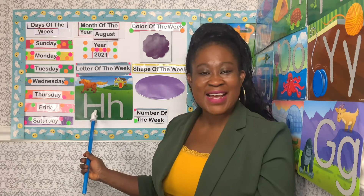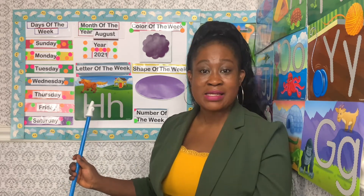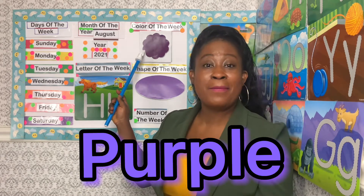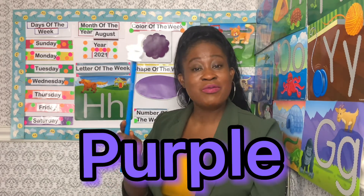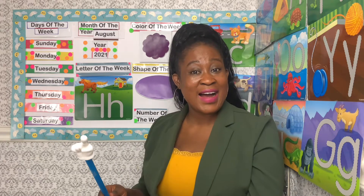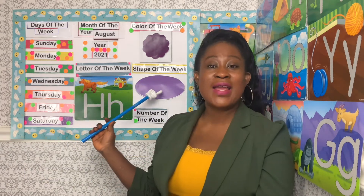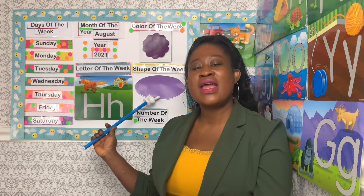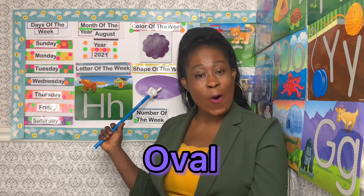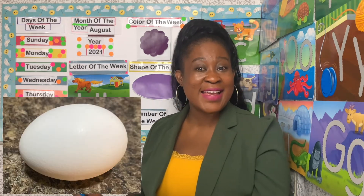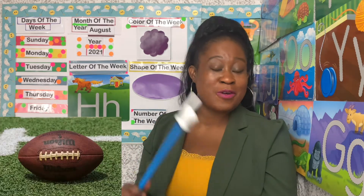This is the uppercase H and this is the lowercase h. And the color of the week is purple, and some of the things that are purple: the eggplant, the plum. Yes! And the shape of the week that we have been talking about all week long is oval — and we talked about the egg, the watermelon, and the football.